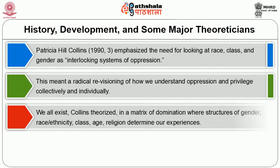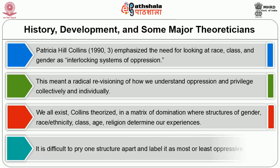We all exist, Collins theorized, in a matrix of domination where structures of gender, race, ethnicity, class, age, and religion determine our experiences. It is difficult to pry one structure apart and label it as most or least oppressive.